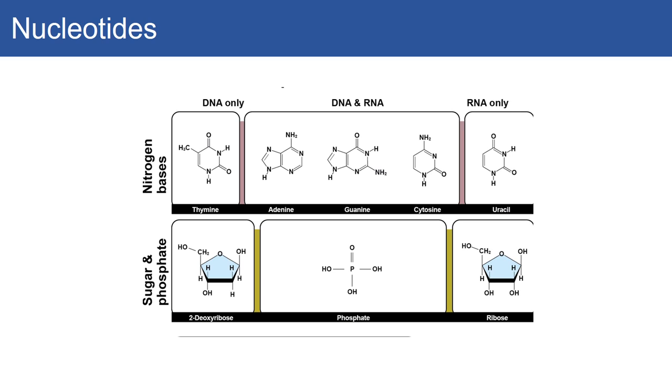There are four nitrogenous bases unique to DNA: thymine, adenine, guanine, and cytosine. When we talk about RNA we'll discuss uracil. These bases are very good hydrogen bond donors and acceptors, which leads to the structure you see with DNA.